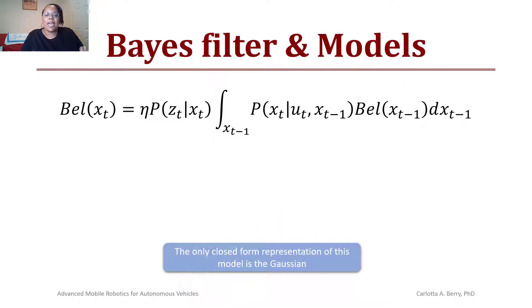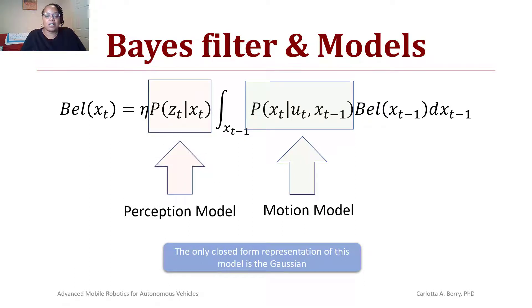So recall that Bayes filter and the model had a motion model which is the probability of x given u, which is multiplied by the current belief. That can either be discrete or continuous, which means either a summation or an integral, and then that is multiplied by the perception model which is the probability of z given x.